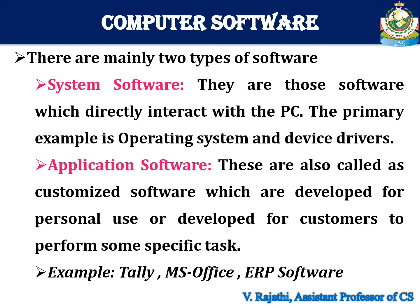Computer software. There are mainly two types of software: system software and application software. System software consists of those programs which directly interact with the PC. Application software is also called customized software, which is developed for personal use.